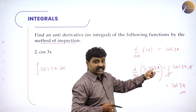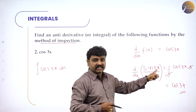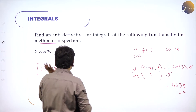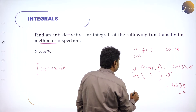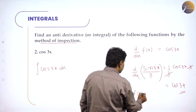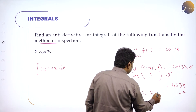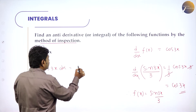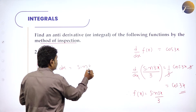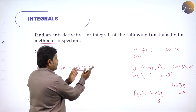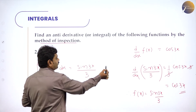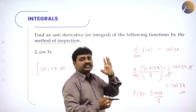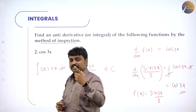If I differentiate only sin 3x, I get cos 3x into 3. But I don't want the 3 because my question has only cos 3x. So f(x) is sin 3x by 3, or 1/3 sin 3x. Therefore, the integration of cos 3x is sin 3x divided by 3, plus C. Because if I differentiate this I will get the original expression. Every time you can't sit and do this — so we have a method called method of inspection and formulae that will apply in coming sessions.